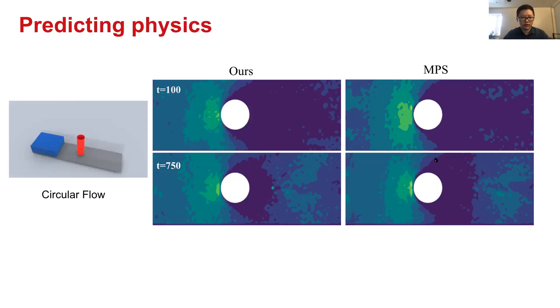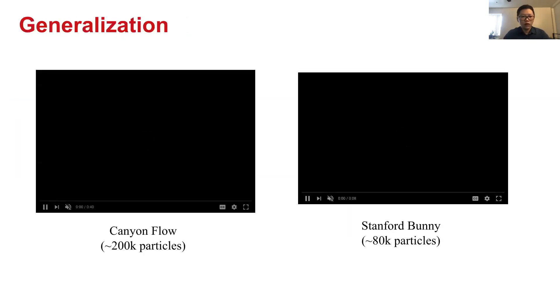Also, our model can predict reasonable pressure distribution. As you can see here, as time goes through in this circular flow case, our model can also capture the pressure higher, lower pressure region change and agrees well with the ground truth's result.